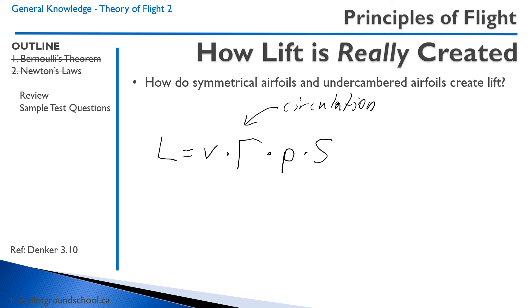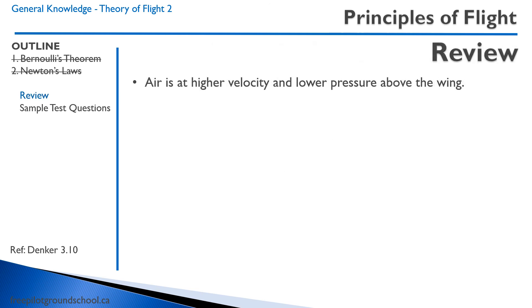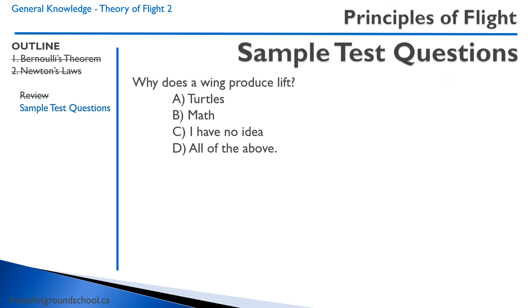Thanks a lot. We'll review quickly here before getting into some sample test questions. Just remember that the air is at a higher velocity and a lower pressure above the wing than it is below the wing — that should help you out quite a bit. Sample test question: why does a wing produce lift? A. Turtles. B. Math. C. I have no idea. D. All of the above. The correct answer is all of the above. Thanks for joining me — I hope you learned something, and if nothing else, you got a bit more interested in how a wing produces lift. We'll see you in the next one. Thank you.